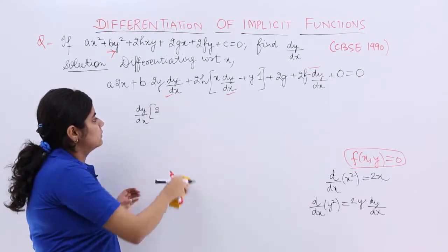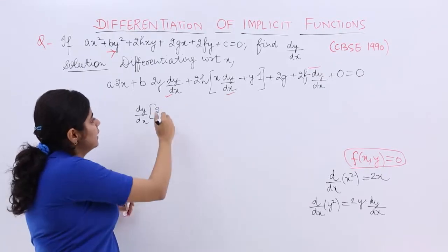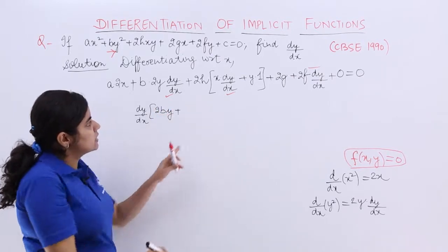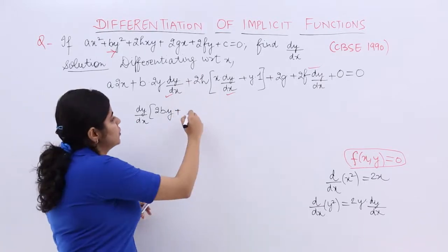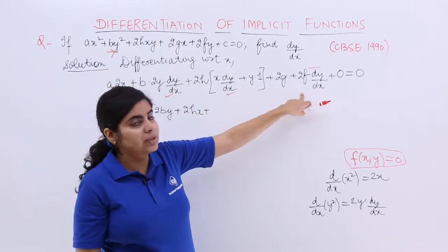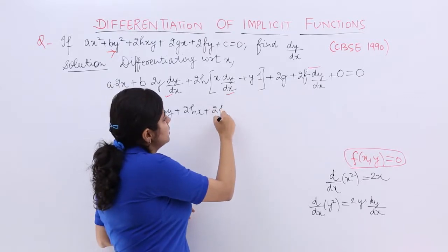So it becomes dy/dx 2by. Let me make it more clear. It is 2by. The first term is 2by. Plus, if dy/dx comes out as common, it becomes 2hx. Plus, from here dy/dx is common, it becomes 2f.